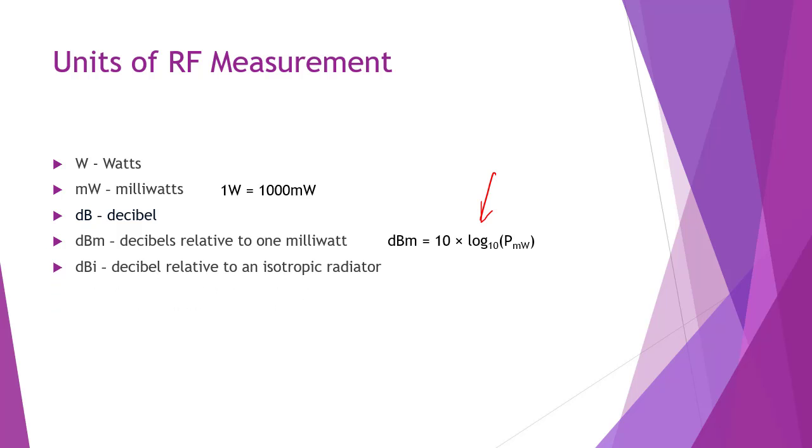DBI represents a measurement of power gain used for RF antennas. Here the I stands for isotropic. The DBI value is calculated against the input power provided to the antenna to determine the actual output power in the direction in which the antenna propagates the RF signals.